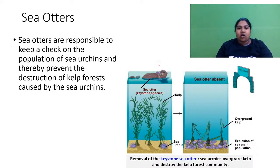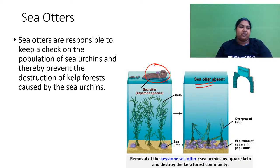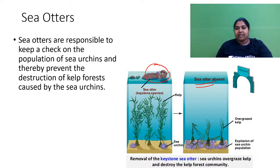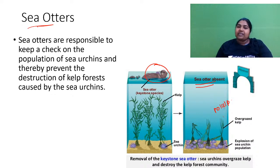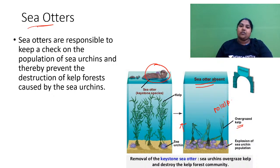The best example is the sea otter. If the sea otter is absent, the sea urchin feeds voraciously on the kelp, and there is no kelp left. If there are no sea otters, the sea urchin population reaches high, and with no kelp, the total ecosystem is destroyed.